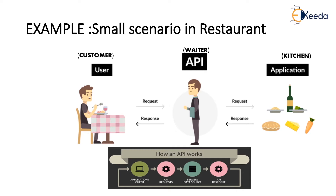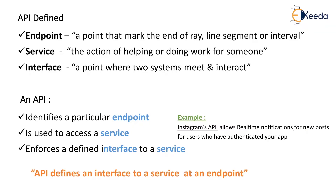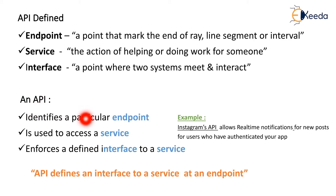The application client sends an API request to the server, which returns data as the API response. An API is defined with an endpoint, service, or interface. The endpoint marks the end of an array, line segment, or interval. The service is the action of helping or doing work. The interface is the point where two systems meet and interact. The API identifies a particular endpoint, accesses a service, and enforces a defined interface to that service. For example, an API allows real-time notifications for new posts for users who have authenticated your application.